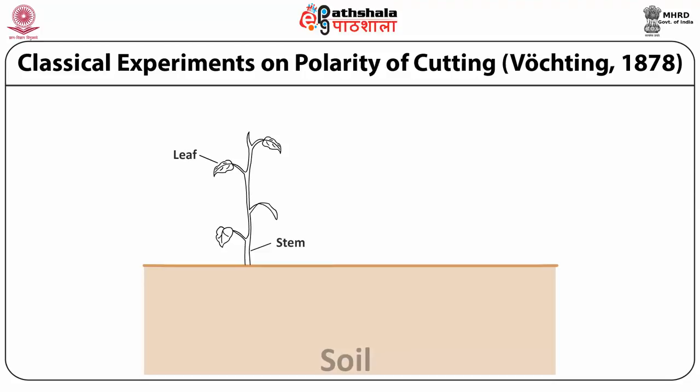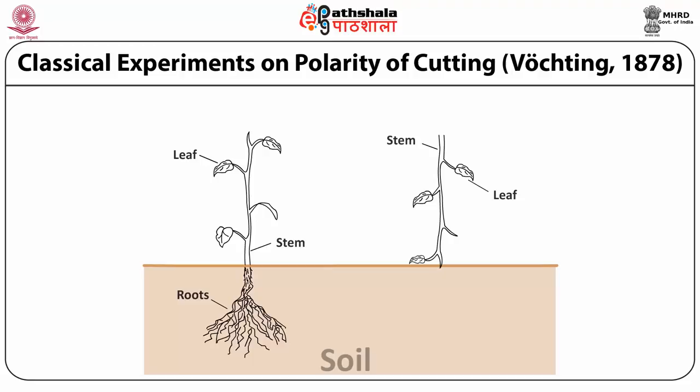Two cuttings from the same plant were taken — one was placed with the correct polarity so that the lower cut end should form the roots, but in the other cutting it was placed upside down. What was actually observed was that the roots emerged from the lower cut end irrespective of what the polarity was, which shows that in a plant body different functions are taken based on the convenience at that stage.